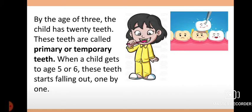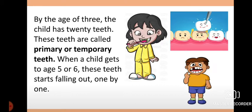When a child gets to age five or six, the primary or temporary teeth start falling one by one. This is a very peculiar scenario — everybody must have gone through it. Our teeth started falling one by one, and this is a very miraculous and interesting thing that happens. So by the age of five to six, the teeth start falling.